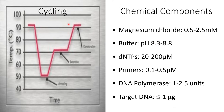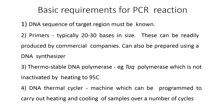The PCR cycle consists of three main steps: denaturation, annealing, and extension. Basic requirements for PCR are that the DNA sequence of the target region must be known, and primers typically 20 to 30 base pairs in size, which can be produced by commercial companies or prepared using a DNA synthesizer. A thermostable DNA polymerase such as Taq polymerase is used, which is not inactivated by heating at 95 degrees centigrade — the temperature used for denaturation.